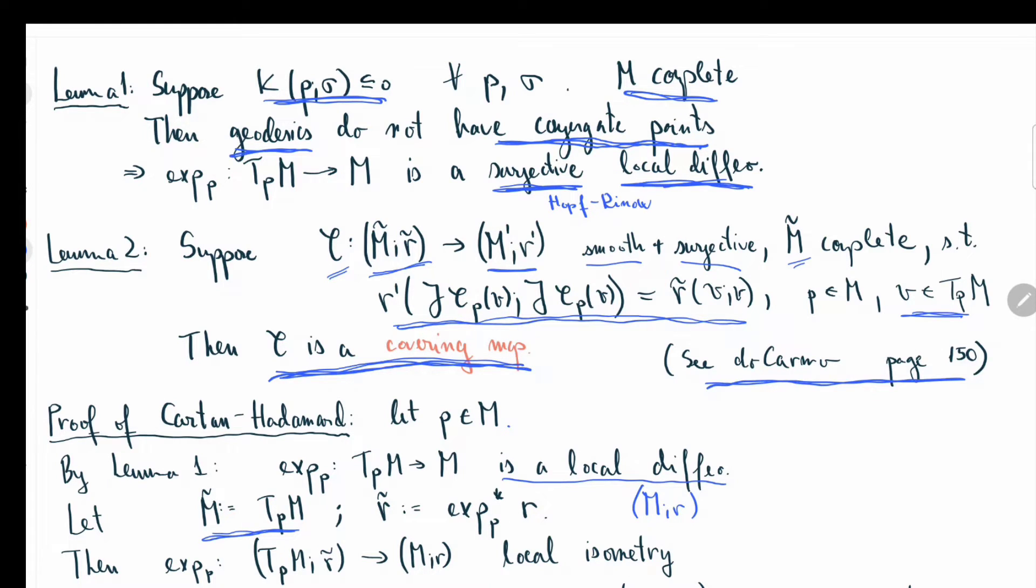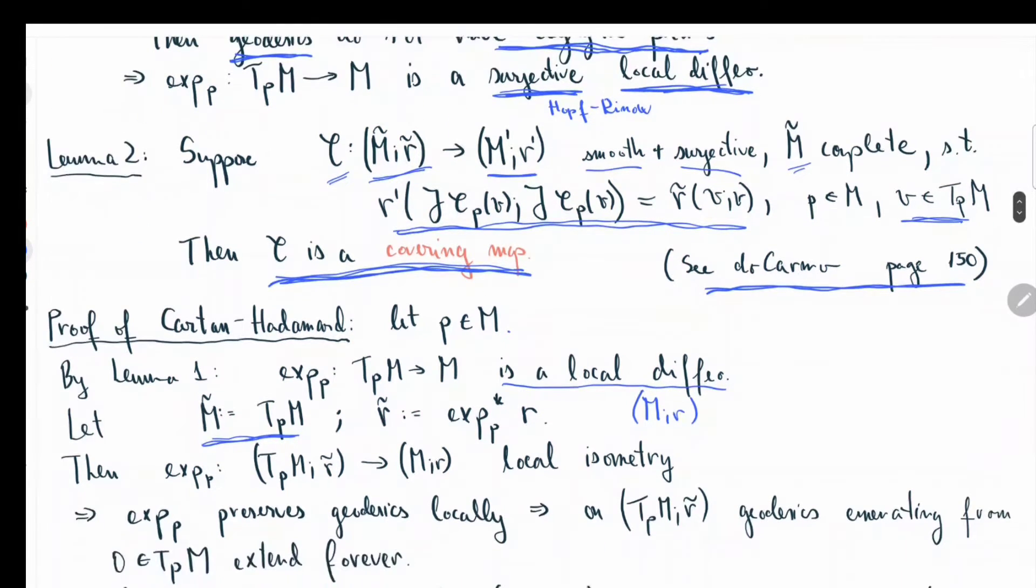Since exp is a local diffeomorphism, r-tilda is always going to be a Riemannian metric. So in particular, exp is going to be a local isometry with the Riemannian structure formed by r-tilda.